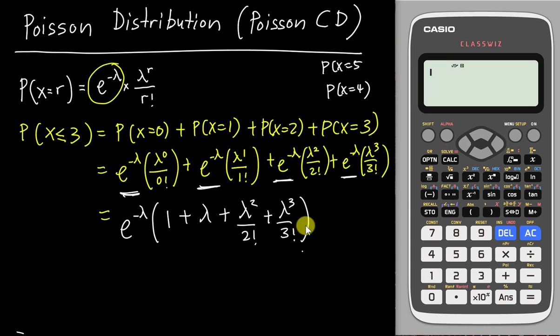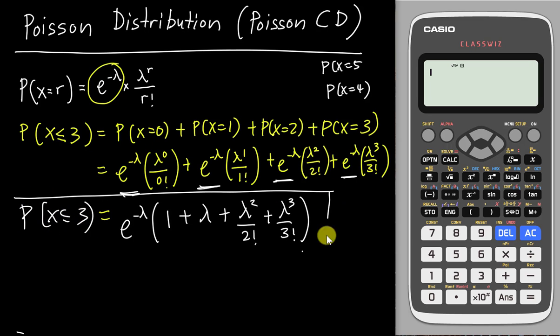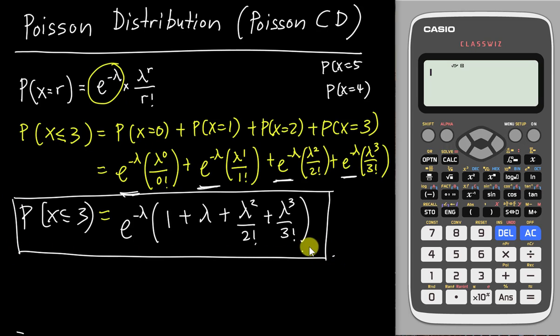This is how we compute X is less than or equal to three quickly using this formula. This formula is what we use for Poisson CD.